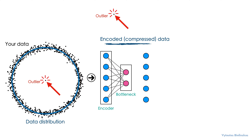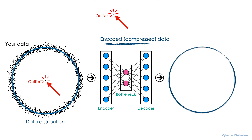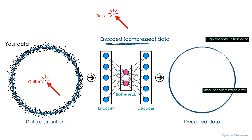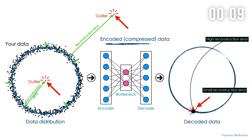The last part of the autoencoder is the decoder. The result of the bottleneck is passed to the decoder. The decoder does its best to revert the compressed representation into the original data distribution — in other words, it tries to reconstruct the compressed data into the original representation. As a result, all data points have their own reconstruction error. Data points along the dominating distribution line have low reconstruction error, while those far away from that line have high reconstruction error. The ones with high reconstruction error are our outliers.